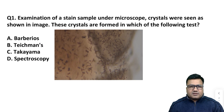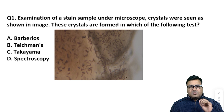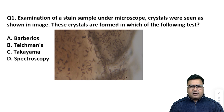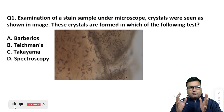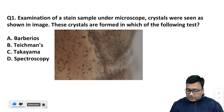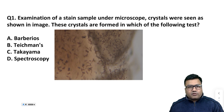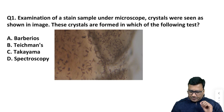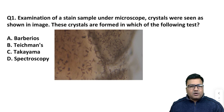The question says: examination of a stain under microscope — crystals were generated and those crystals are seen in the image. These crystals are formed in which of the following tests? The options are Barbario's test, Teichmann's test, Dachyama test, or spectroscopy.